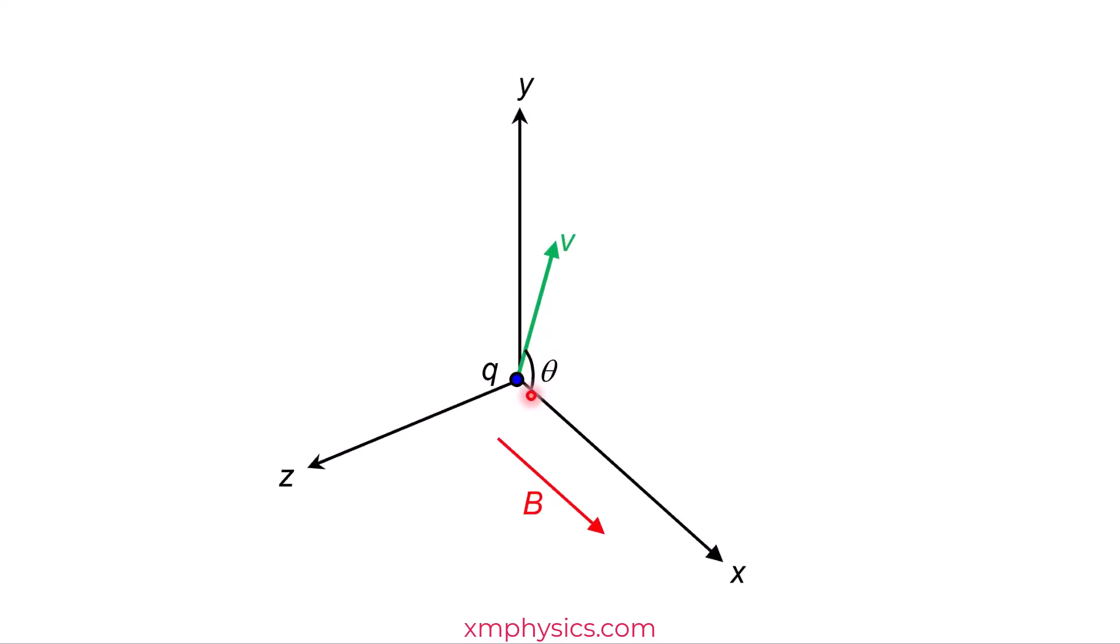Now, what if the velocity is like this? It's in the XY plane, making an angle of theta with the X axis, and the magnetic field is along the X axis. So the velocity is neither completely parallel to the magnetic field, nor completely perpendicular to the magnetic field. So what is the charge going to do?